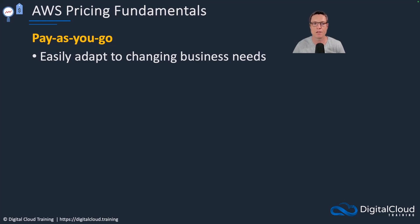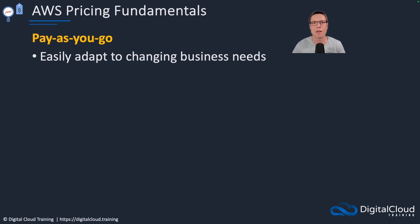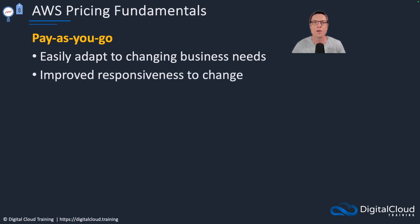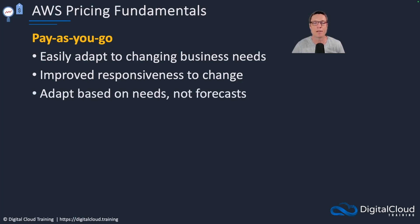One pricing framework is pay-as-you-go — that's the default. This is where you're just paying for what you use, which gives you lots of flexibility. You can easily adapt to changing business needs: you need a hundred instances one day, only ten the next. No problem — terminate or shut down the ones you don't need, and now you're only paying for ten instances. You can respond to change very easily and adapt based on needs, not on forecasts.